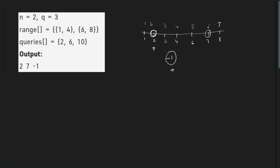Basically, you are given some ranges, you form a new sequence based on those ranges, and you find the kth smallest number for each query. The queries are not very large — there are up to 10^3 ranges and 500 queries — so you can answer all of them in O(N × Q) time.